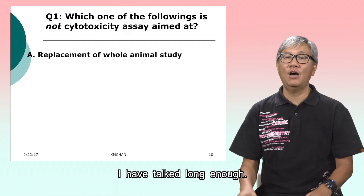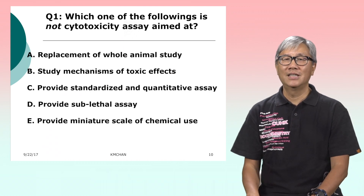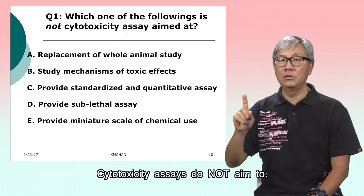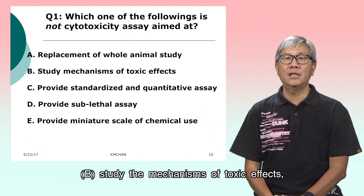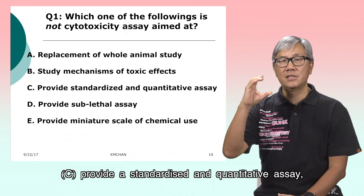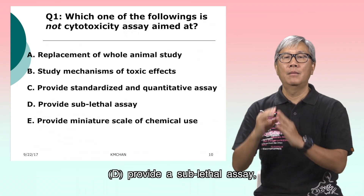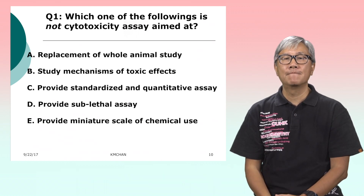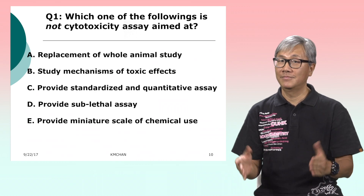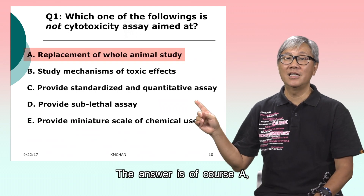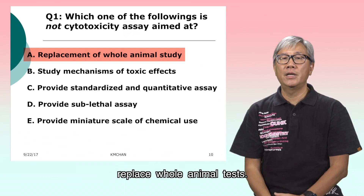I have talked long enough. Here is an MCQ multiple choice question for you to complete. Cytotoxicity assays do not aim to: A. replace a whole animal study. B. study the mechanism of toxic effects. C. provide a standardized and quantitative assay. D. provide a sublethal assay. E. present a miniature scale of chemical use. The answer is, of course, A — cytotoxicity assays do not aim to replace whole animal tests.